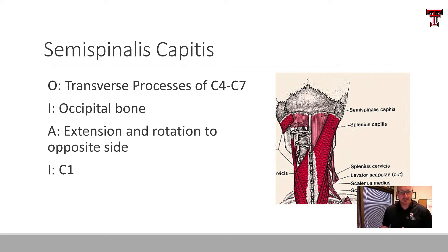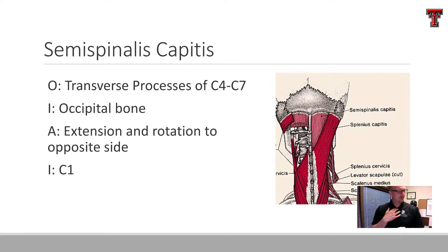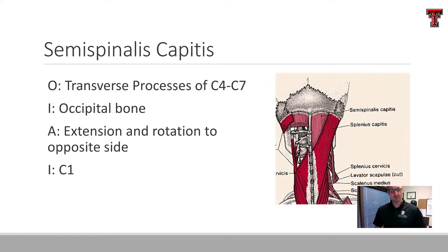Semispinalis capitis originates on the transverse processes of the lower cervical vertebrae — C4, C5, C6, and C7 — and inserts somewhat laterally on the occipital bone. It's going to be a head extensor and a rotator to the opposite side — kind of like the sternocleidomastoid anteriorly that we talked about last time, but functioning similarly on the posterior side. It gets its innervation from C1.